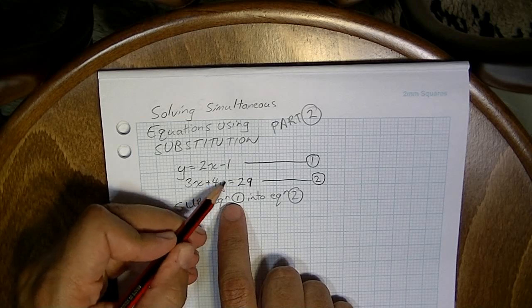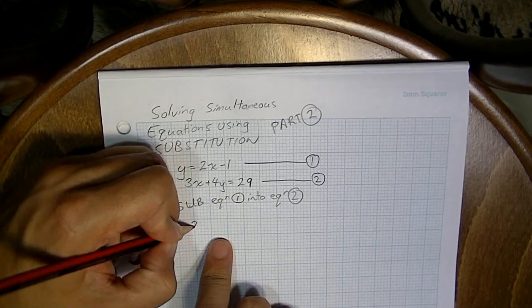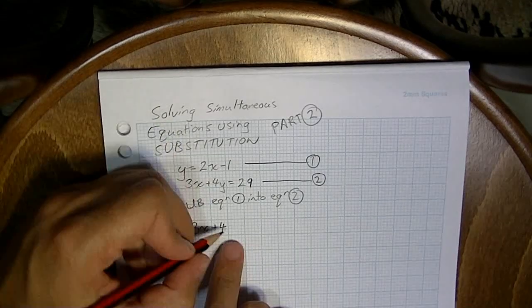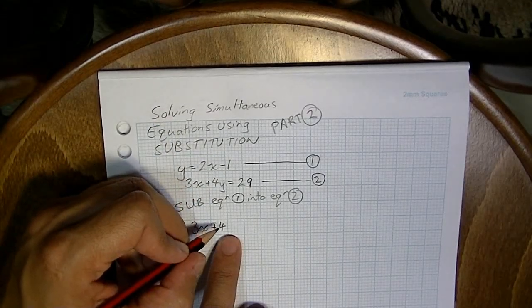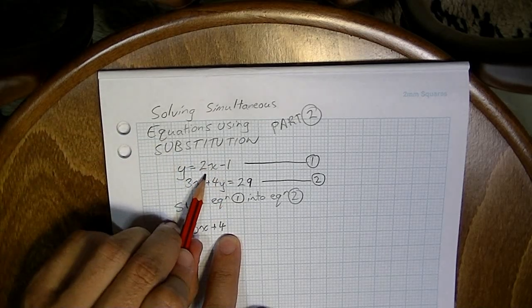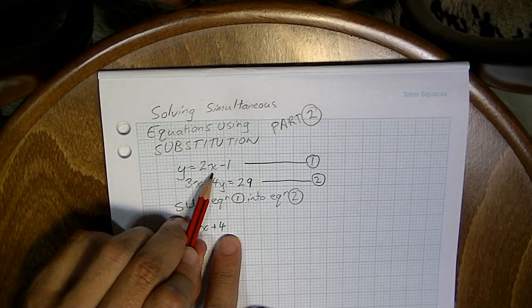So this is where we see y, so that's where it's going to happen. So 3x, that's the same, plus 4 times y. Now that's times whatever y was in equation one. And in equation one, y is equal to 2x minus 1.